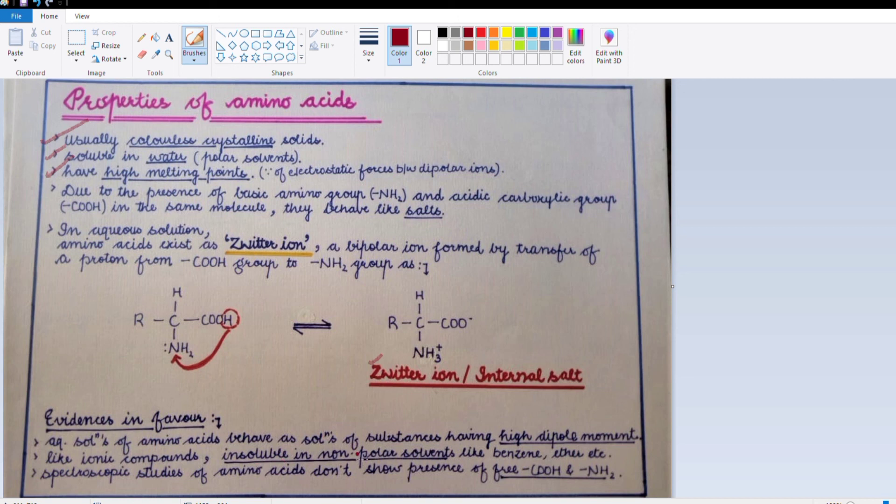The other evidence is that amino acids are insoluble in non-polar solvents like benzene and ether, but soluble in polar solvents. This gives us the hint that amino acids exist in the form of zwitterion.